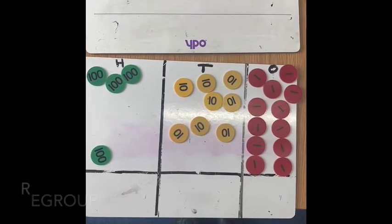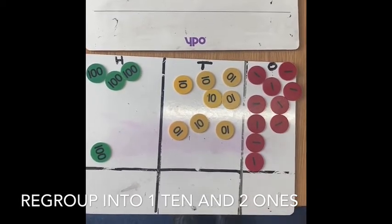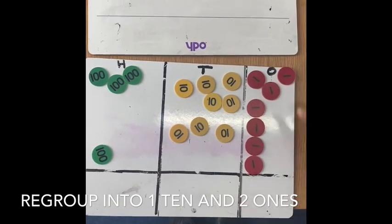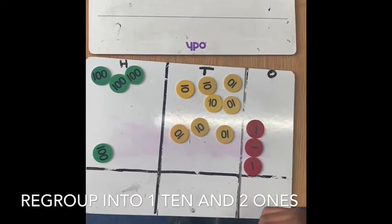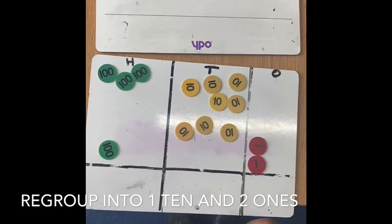And 12. Because this is more than 10, we need to regroup: 1, 2, 3, 4, 5, 6, 7, 8, 9, 10 ones for a ten.